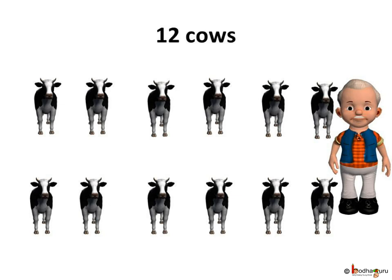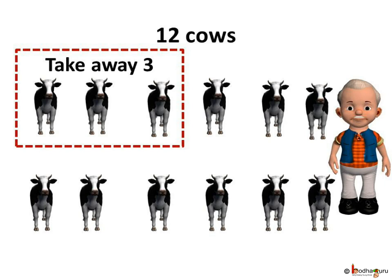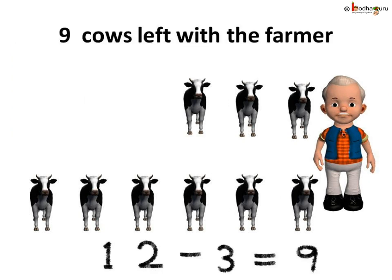Let us try to divide 12 cows equally amongst three brothers once again. There were 12 cows with the farmer. Since we want equal share for the three brothers, let us take away a group of three cows — that is one cow for each brother. So, three cows are taken away. Now, 12 minus 3 is 9, so 9 cows are left with the farmer.